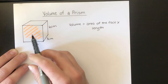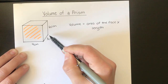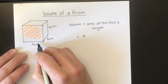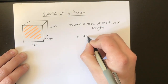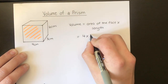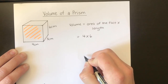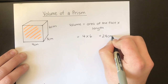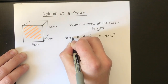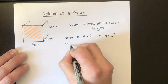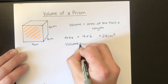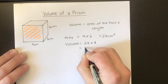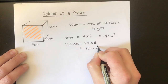The area of this orange shape times by the length of the shape. So we have 4 centimeters across for the length, times by 6 — the width of the rectangle. 4 times 6 gives us the area of the face, which is 24 centimeters squared. Then the volume is the area times by the length, which gives us 72 centimeters cubed.